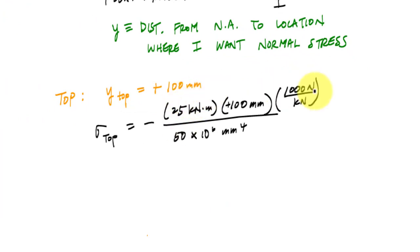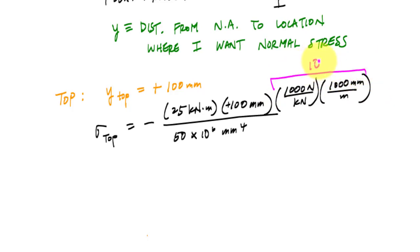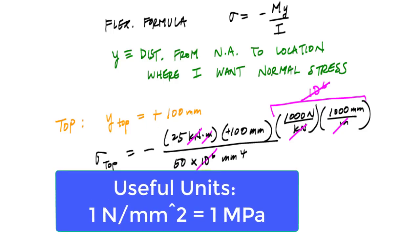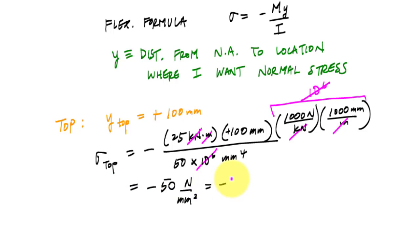Plugging into the bending formula, I also need unit conversions — converting kilonewtons to newtons and meters to millimeters. The units work out conveniently so that the 10-to-the-sixth factors cancel. I get an answer in newtons per millimeter squared: negative 50 N/mm², which is the same as negative 50 megapascals. The negative means 50 MPa in compression.